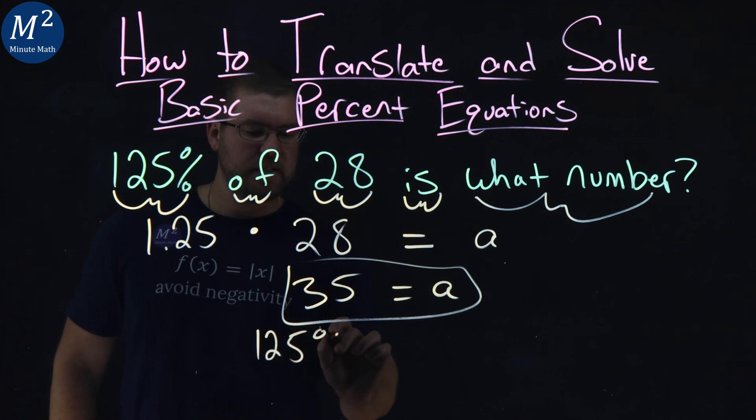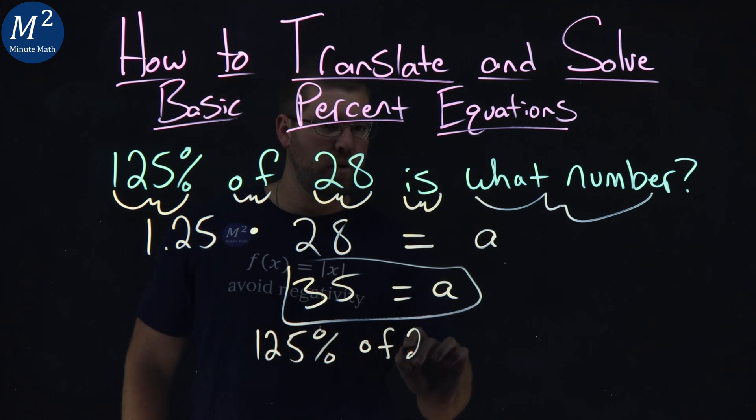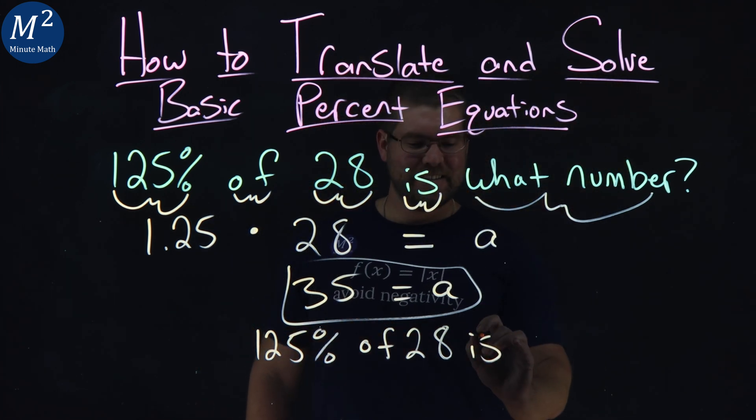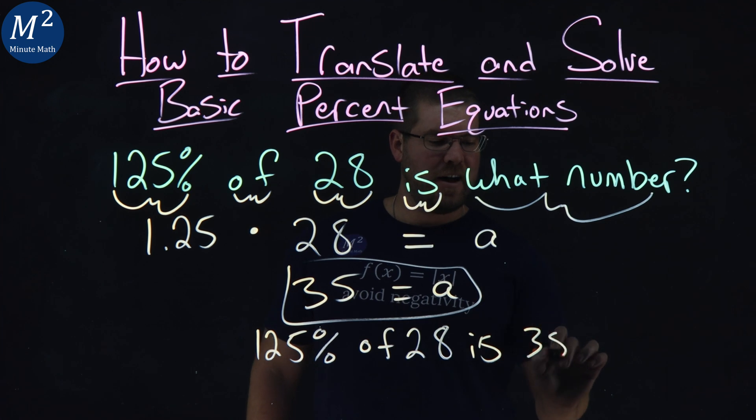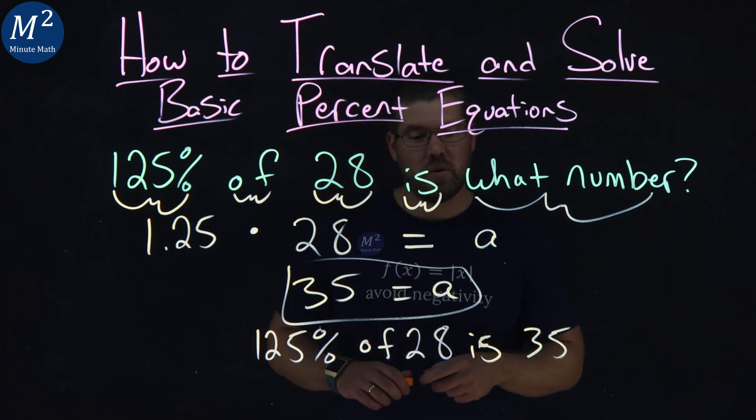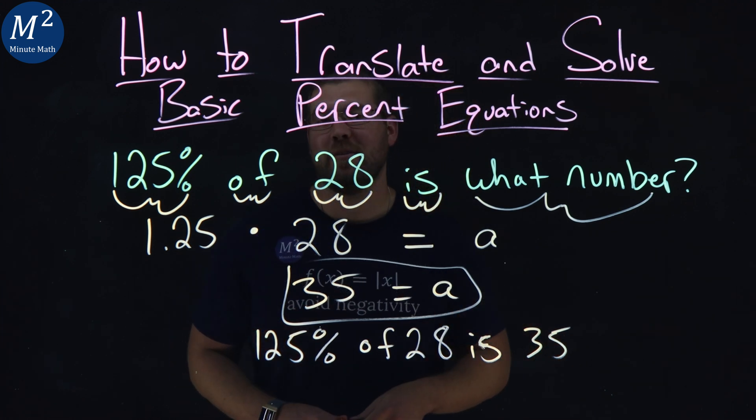125% of 28, or of 28 is—there we go—is 35. And there's our final statement: 125% of 28 is, if you're right, is 35.